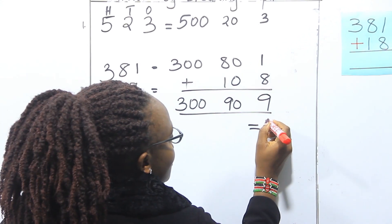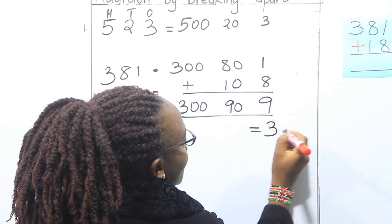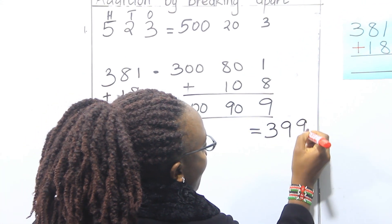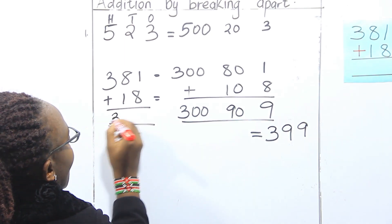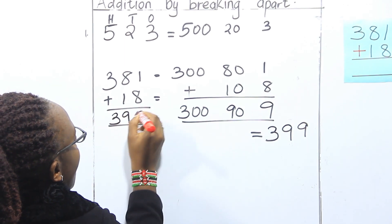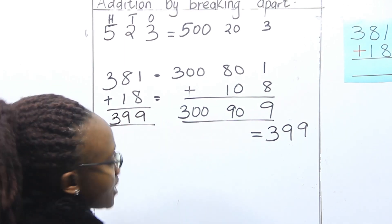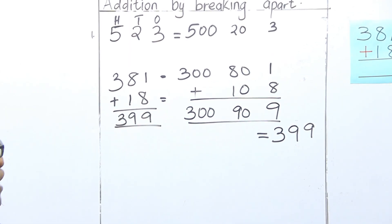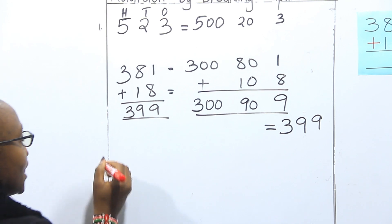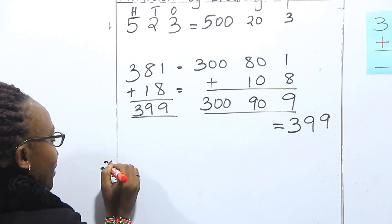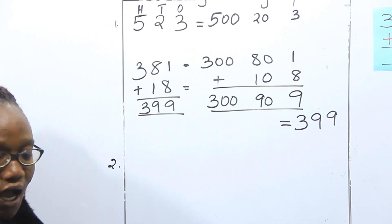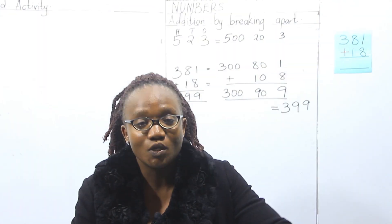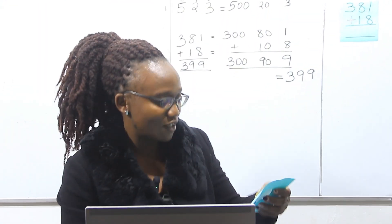So our answer is three hundred, ninety, and nine — 399. Let's look at another example. I hope you are enjoying doing this with me.